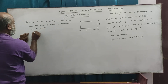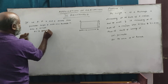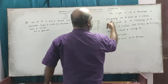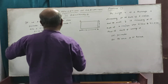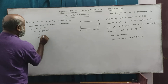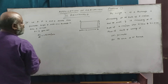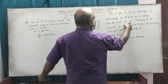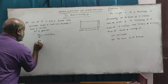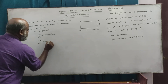It is given that the length x of the rectangle is decreasing at the rate of 5 centimetres per minute, so dx by dt is equal to minus 5 centimetres per minute. The width y is increasing at the rate of 4 centimetres per minute, so dy by dt is equal to 4 centimetres per minute.